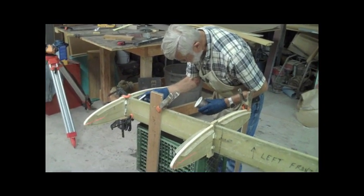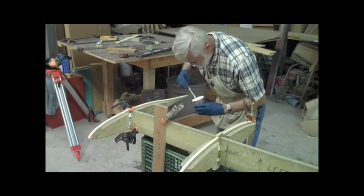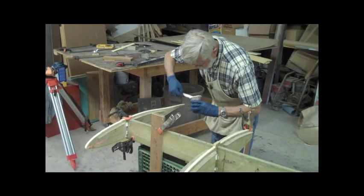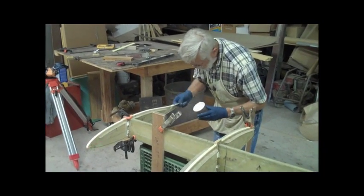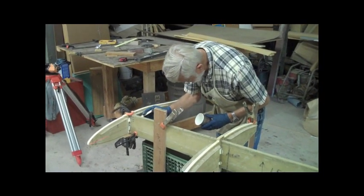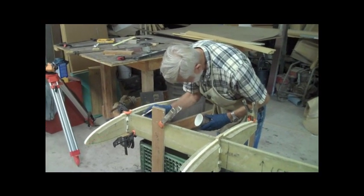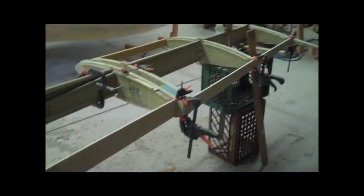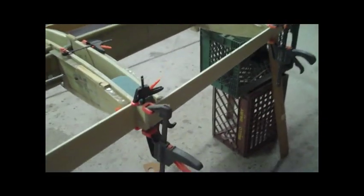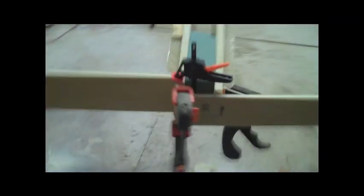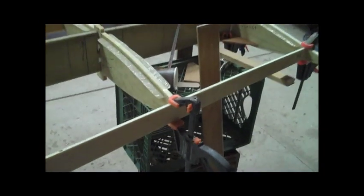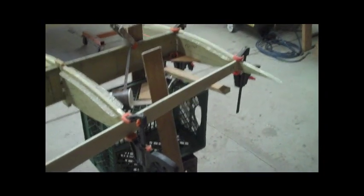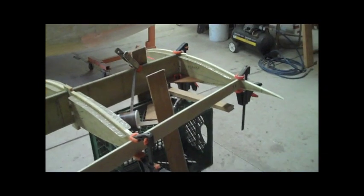The last rib is the G rib. Then we tack the trailing edge in place between the A, C, and D rib. And the outboard spar fits in tight here to the F and G rib. And we're just about done.